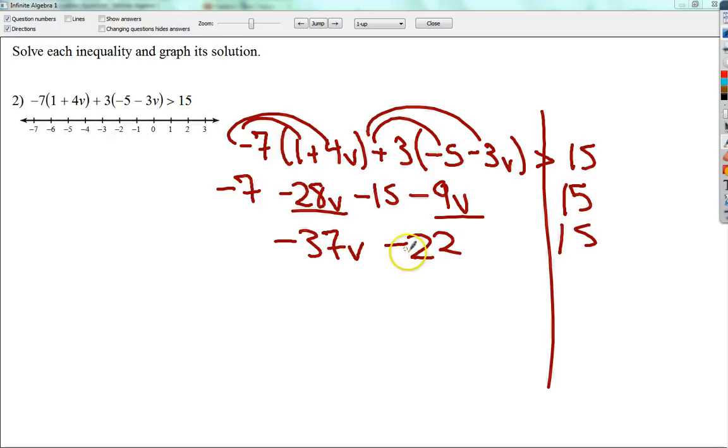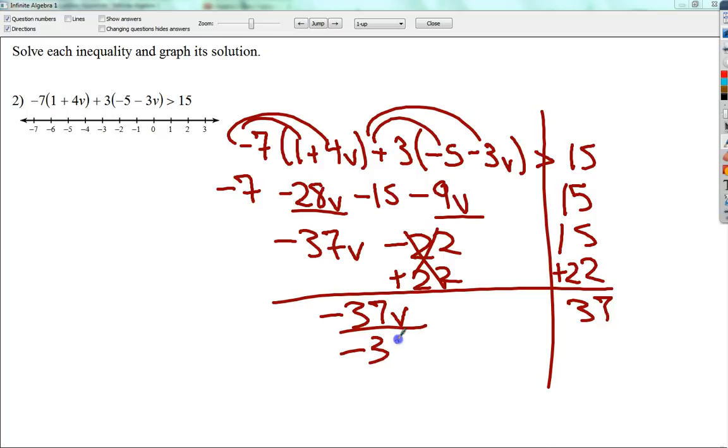To get rid of minus 22, I need to add 22. So you end up with 37 over here. Negative 37v over here. Divide by negative 37.